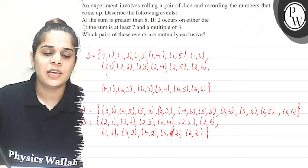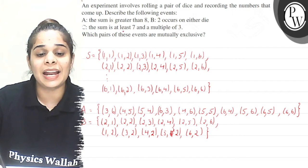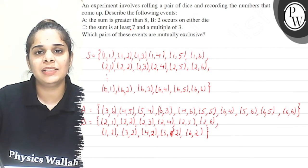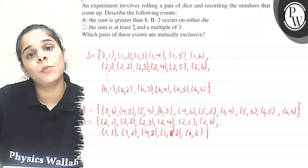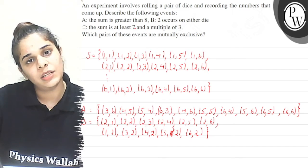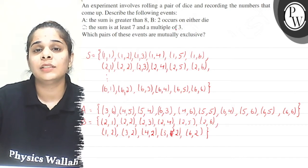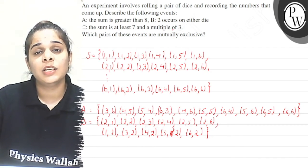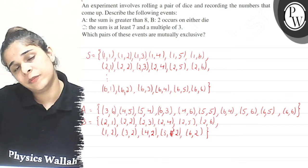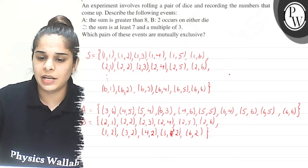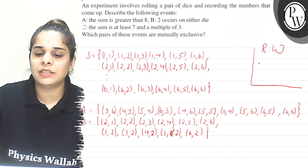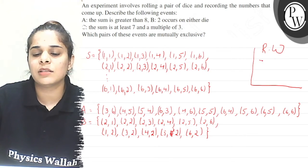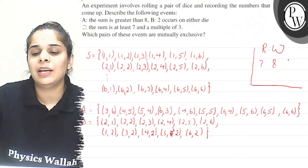Next, Event C: the sum is at least 7 and a multiple of 3. At least 7 means it should be 7 or more. Multiples of 3 are: 3, 6, 9, 12, 15, and so on. The sum can be 7, 8, 9, 10, 11, or 12. It can't be 13 since the maximum sum is 12.